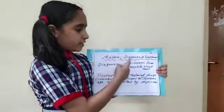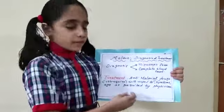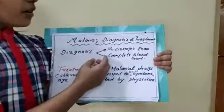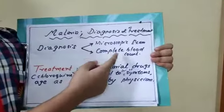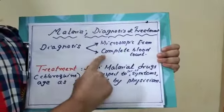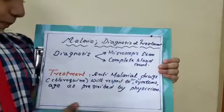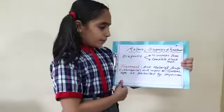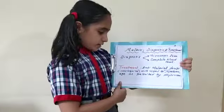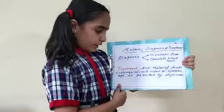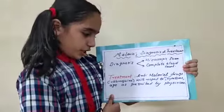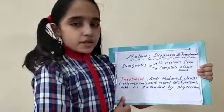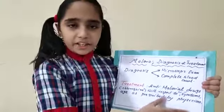Diagnosis and treatment of malaria. The diagnostic methods are microscopic examination and complete blood cell count. Treatment: anti-malarial drugs like chloroquine are prescribed by a physician with respect to the severity of symptoms and age.